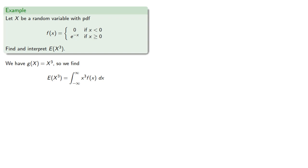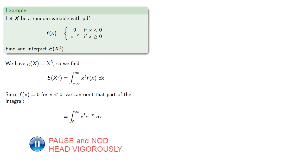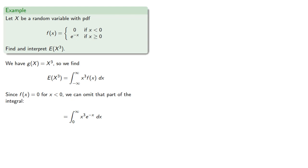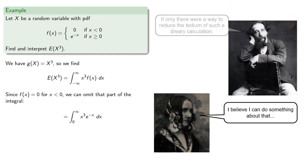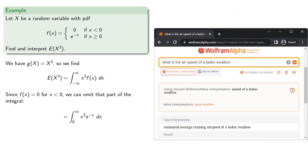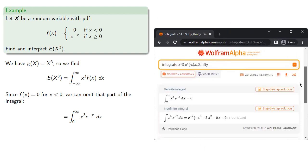Since f of x equals 0 for x strictly less than 0, we can omit that part of the integral and only concern ourselves with the integral from 0 to infinity of x cubed times e to the minus x dx. Since I've done one derivation of the integral, I've satisfied the requirements of my mathematician card. While this integral can be done by repeated integration by parts, we might as well take advantage of a computer algebra system to evaluate the integral, and we find the result.